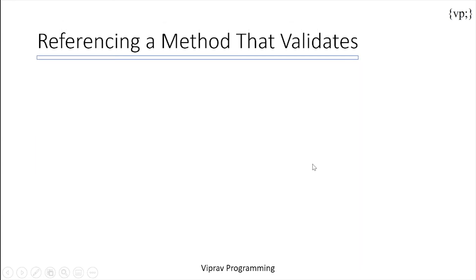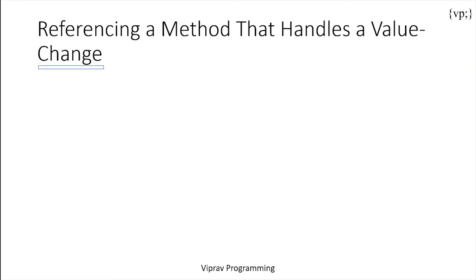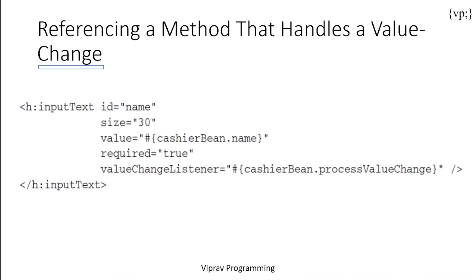Then there's a referencing method that validates. The managed bean's method validateNumberRange validates the number inputted, and the validation changes with each input. There's also referencing a method that handles a value change — another listener that checks a value change — where the managed bean's method processValueChange handles a change to the value of the name of the event.